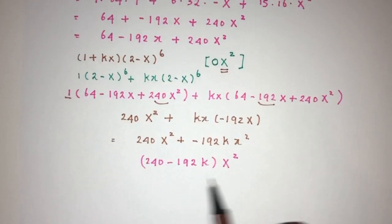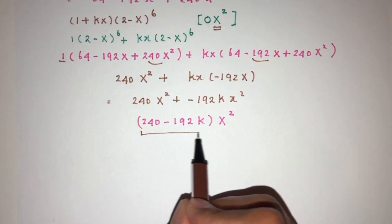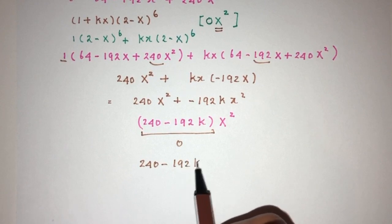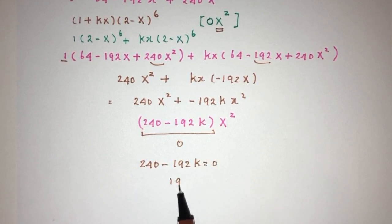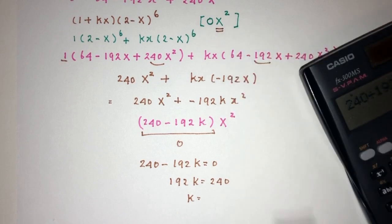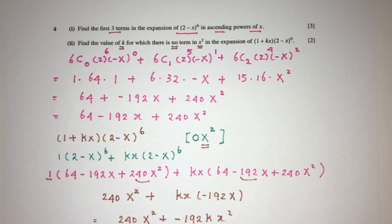And we know this is the term in x squared. And here we have no term in x squared, which means this have to be 0. So let's equate that to 0 and see what happens. That will be 192k have to be 240. So k will be 240 divided by 192. That should be 1.25 for your value of k. And that will be a question to finding k for this binomial expansion.